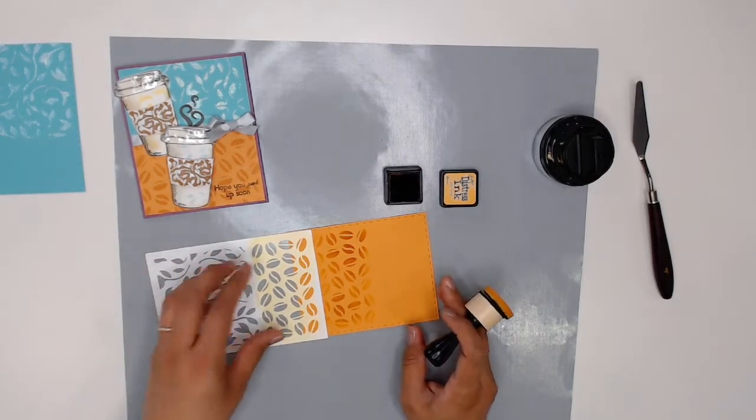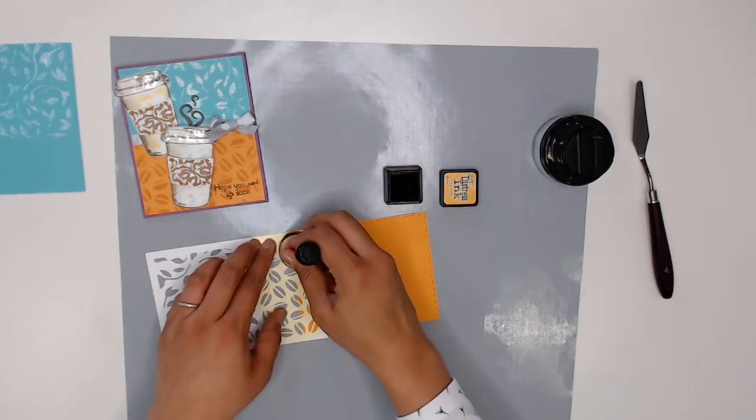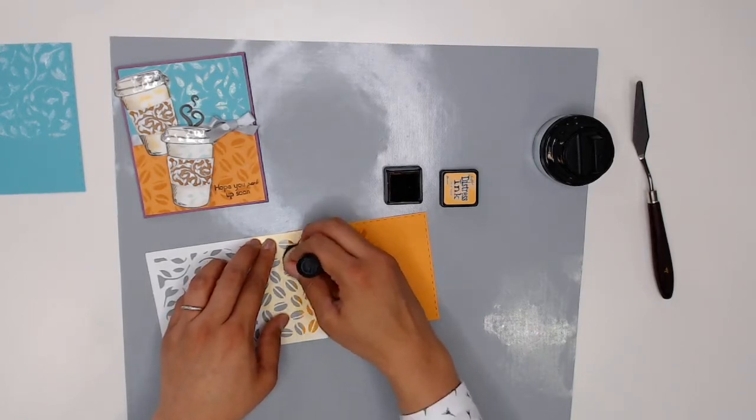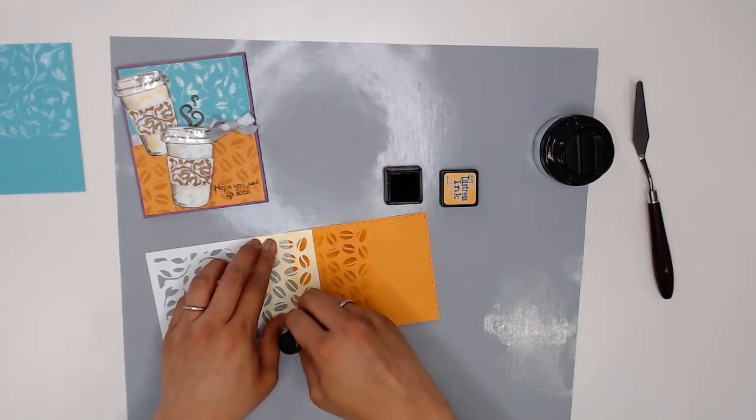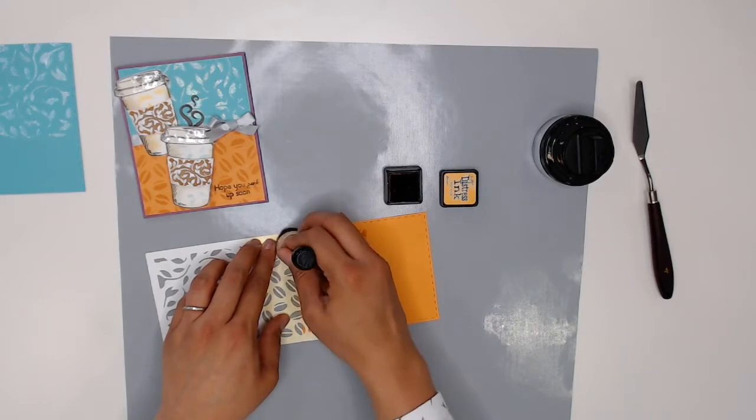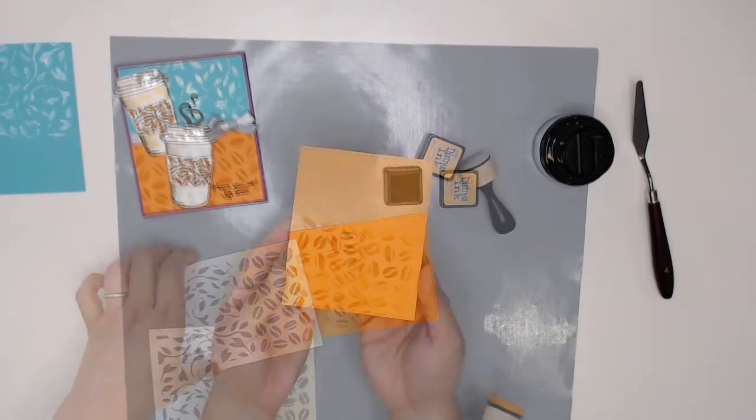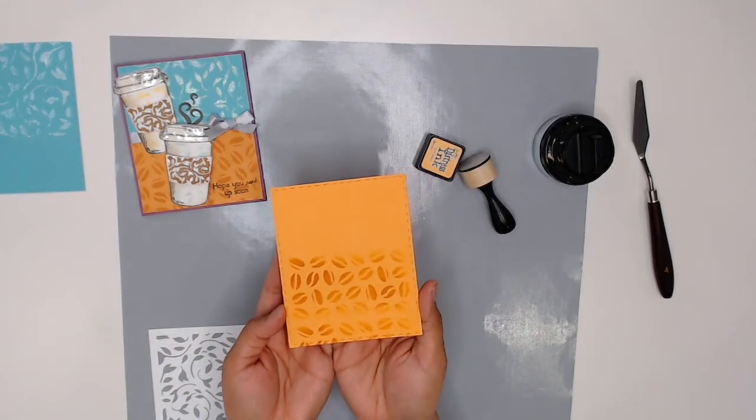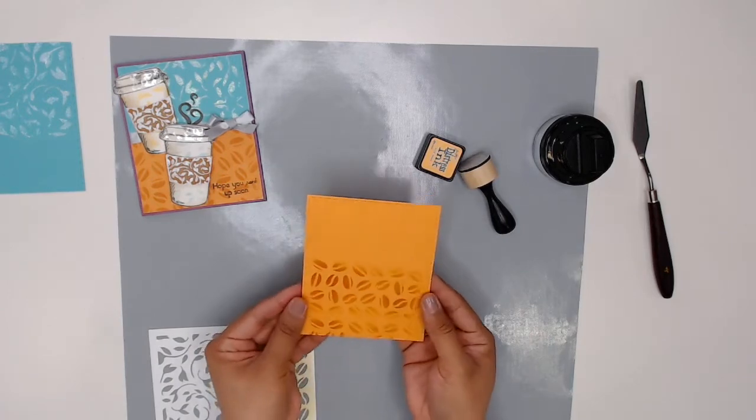There we can see what that looks like and now I'm just going to move my stencil down just a smidge and I'm going to stencil the rest of my cardstock. So now I have a nice coffee bean pattern on the orange cardstock and I can move on to the next step.